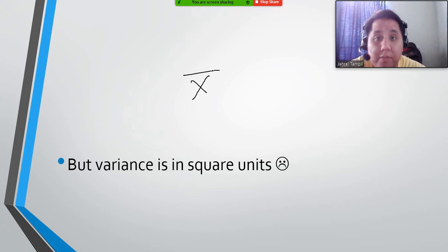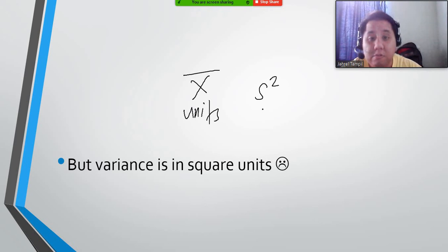But variance, we have squared the numbers that we have added. So in that sense, we cannot use the two as a pair because this is just in units, while variance, which is S squared, is in square units. So we cannot use that one.